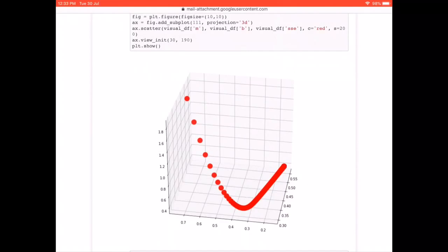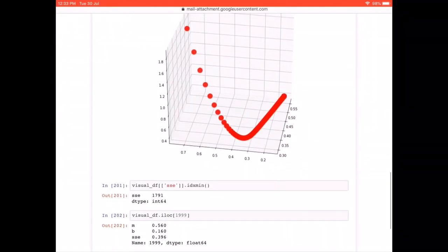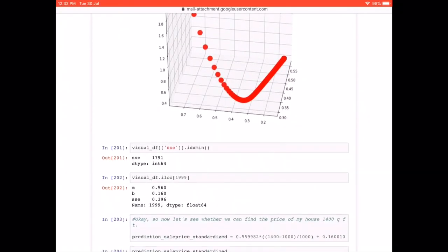And for that particular location, we are interested to find out what was the combination of m and b, which we can simply do by using the dot idx mean function. That way, I will get the location of the ssc. And for that location, we can get my m, b, and my other values.